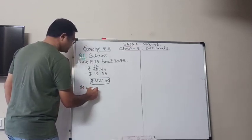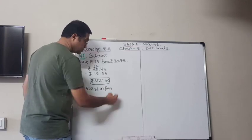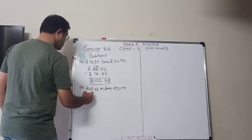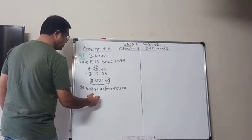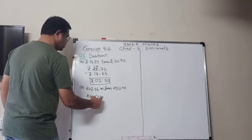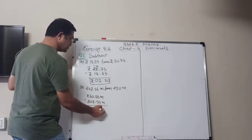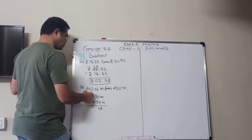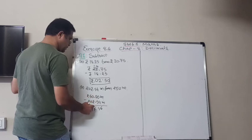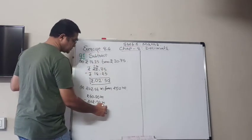B, 202.54 meter from 250 meter. So now 250 is written as 250.00 meter because here there is 2 decimals, 202.54 meter. So now 10 minus 4 is 6. Here there will be 9, 9 minus 5, 4. Here also 9, 9 minus 2, 7. Here there will be 4. So 4 minus 0 is 4 and 2 minus 2 is 0. So your answer is 47.46 meter.